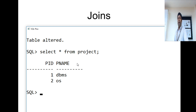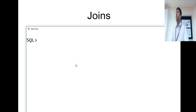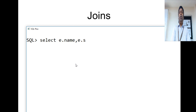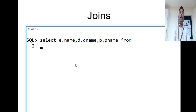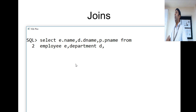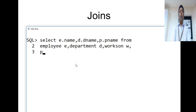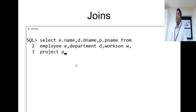The SELECT clause is: SELECT E.name, D.department_name, P.Pname. The FROM clause includes all four tables: employee E, department D, works_on W, and project P. We need all these tables to retrieve the required information.